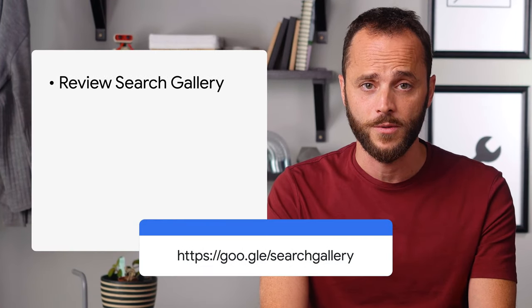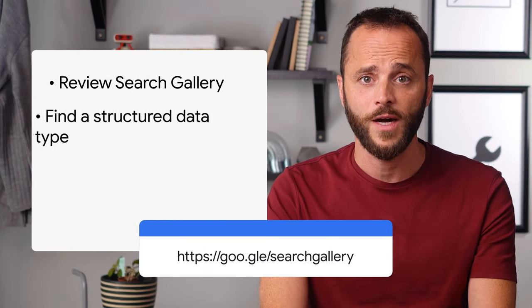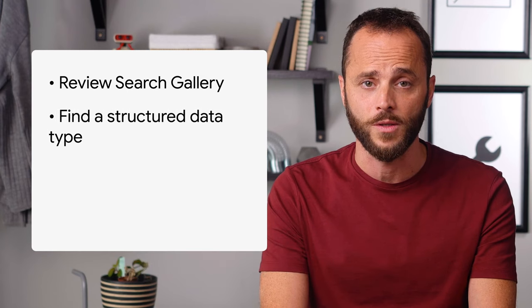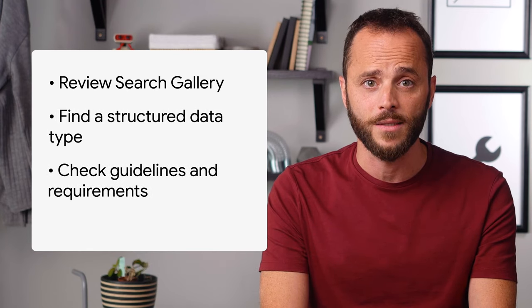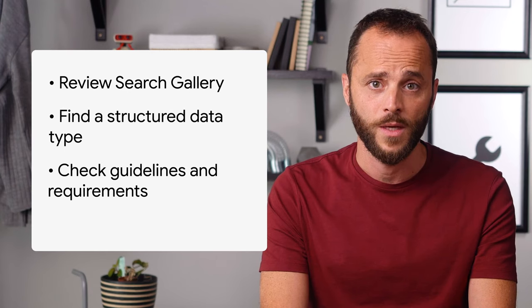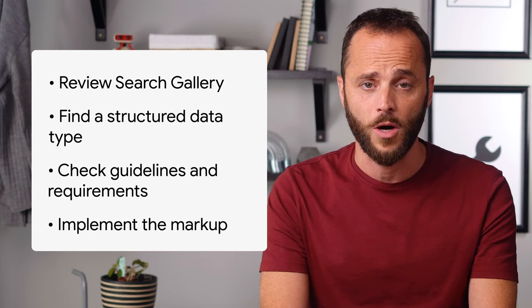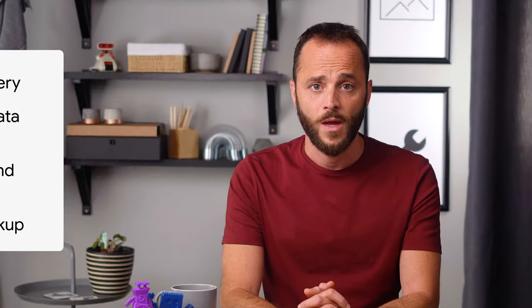In a nutshell, here's how your decision-making process should look like. Review the search gallery examples. Find the structured data type that matches your content. Check guidelines and requirements to be eligible to appear on search. Implement the markup on your pages. After you do that, you can start using Search Console to help optimizing your implementation and monitoring your performance.